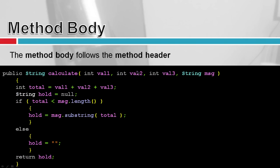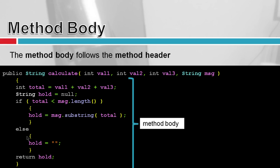The method body is everything that follows the method header, starting with the opening curly brace and ending at the closing curly brace. As fledgling programmers, you need to make sure you keep track of all your curly braces to properly start and end a function. If you get lost with how many curly braces you have inside your function, it'll be hard to debug.